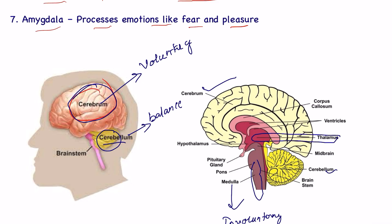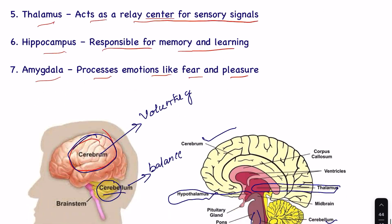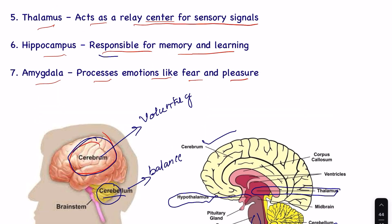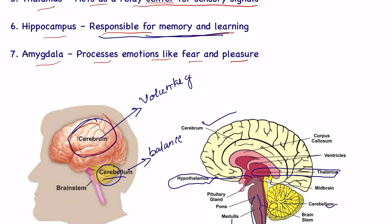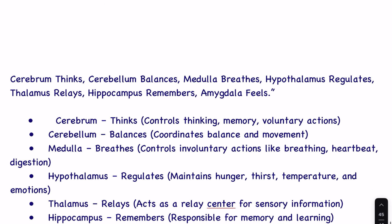Here thalamus acts as the relay center, and below thalamus we have hypothalamus which regulates hunger, thirst, and temperature. Hippocampus is responsible for memory and learning, and amygdala processes emotions like fear and pleasure.